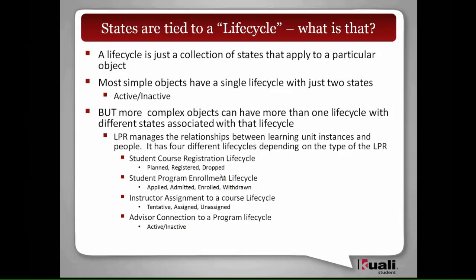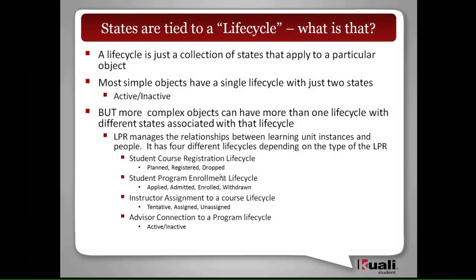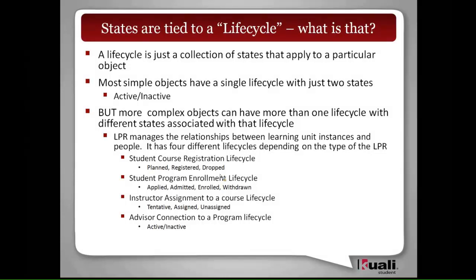I've been using the word 'lifecycle' loosely, but to be more precise: it's just a collection of states. That's all it really is. There is no ordering to the states, no implied way you have to go through the lifecycle. From a business perspective they want to say this is the typical progression, but programmatically it's just a bag of states you work through. Most objects, even though we put a state on every object, just have two states: active and inactive. But for more complex, abstract objects like learning unit and LPR, you may have different states tied to the different type being pushed through.